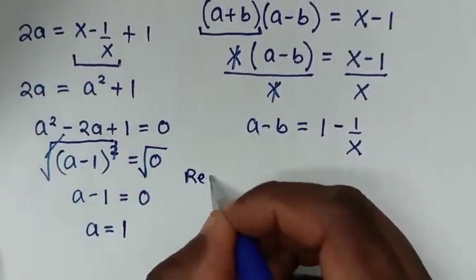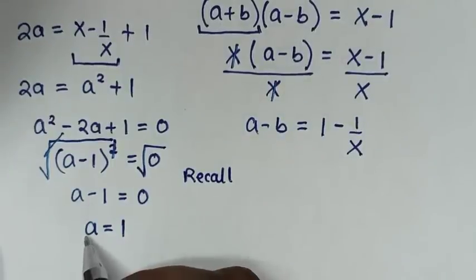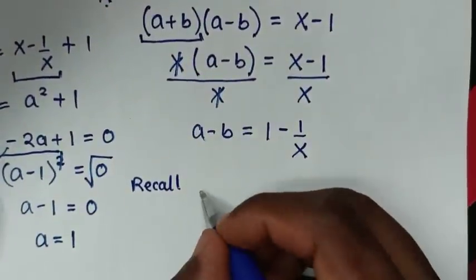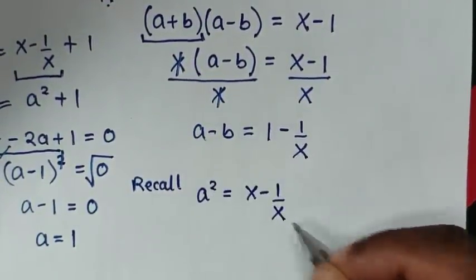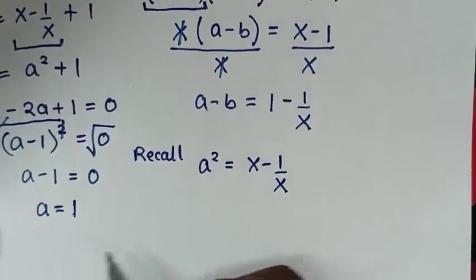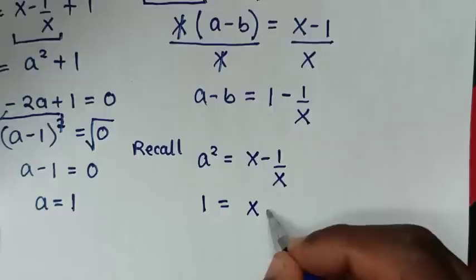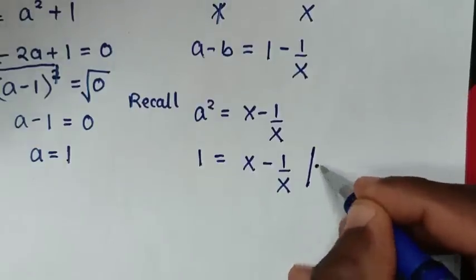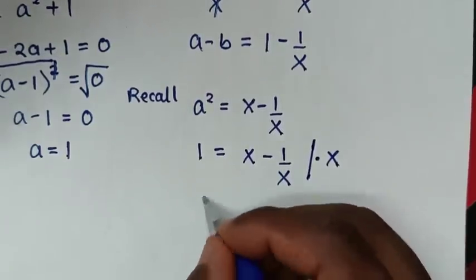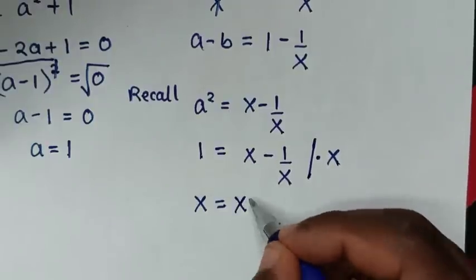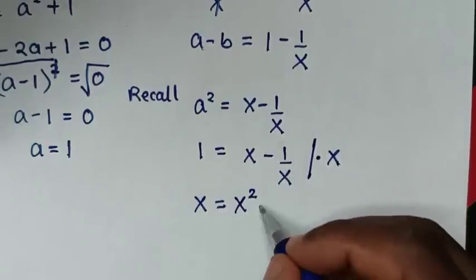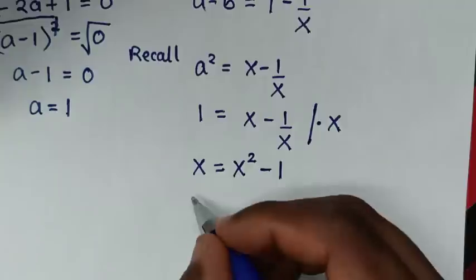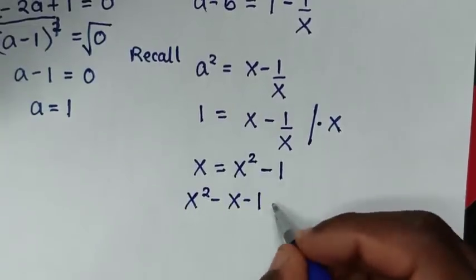We found a equals 1, but we need the value of x. Recalling that a squared equals x minus 1 over x, and substituting a equals 1, we get 1 equals x minus 1 over x. Multiplying the whole equation by x: x equals x squared minus 1. Rearranging gives x squared minus x minus 1 equals 0.